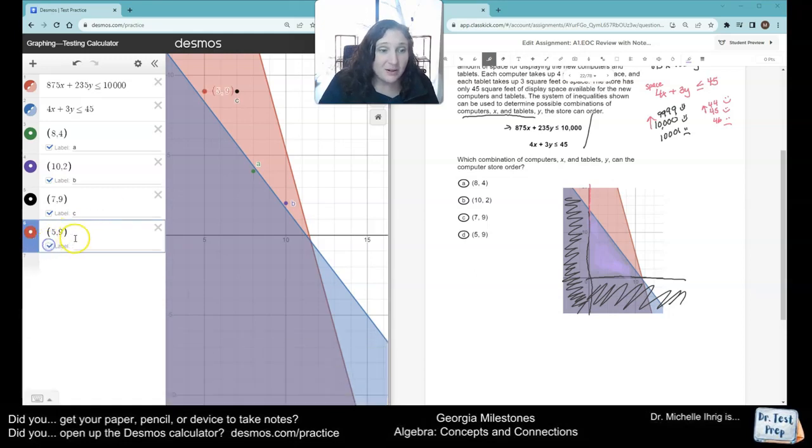So the correct answer, literally done in one minute, if I didn't explain everything to you, is choice A. Because choice A is the only point that is in the blue and the red section. So that's the only one that can make it true.